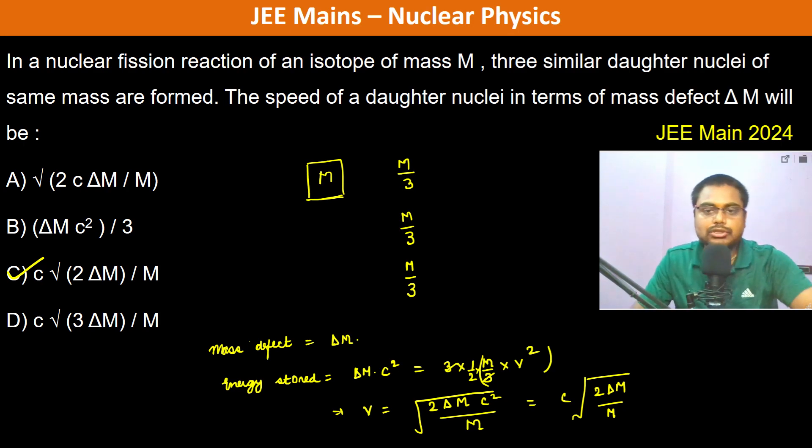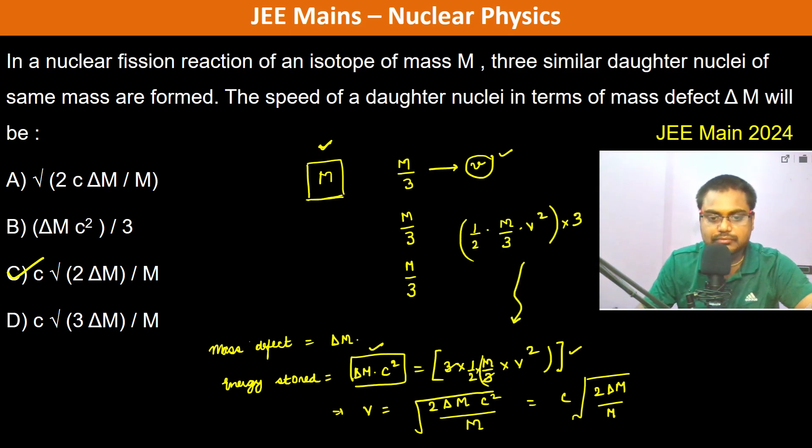What's happening is each daughter nucleus has velocity v. The mass stored as binding energy, ΔM·c², gets released and converts into kinetic energy of all three daughter nuclei. One daughter nucleus has kinetic energy of (1/2)(M/3)v², so all three together have 3 times that, which equals ΔM·c².